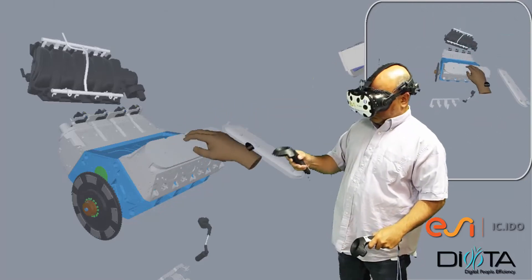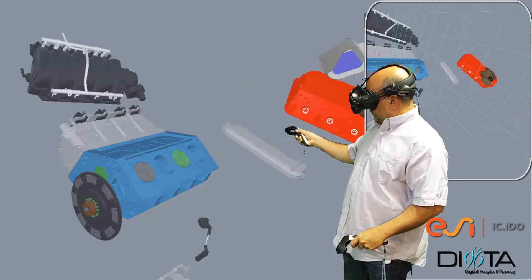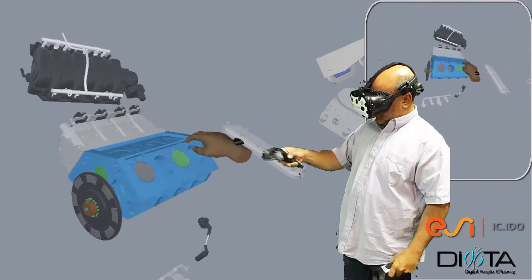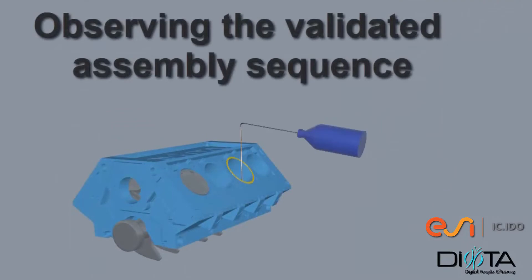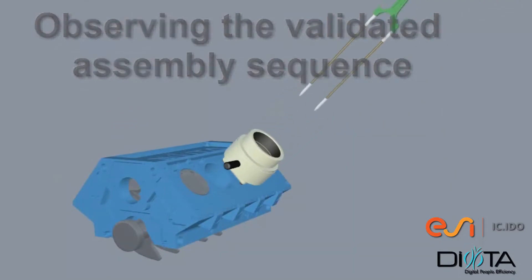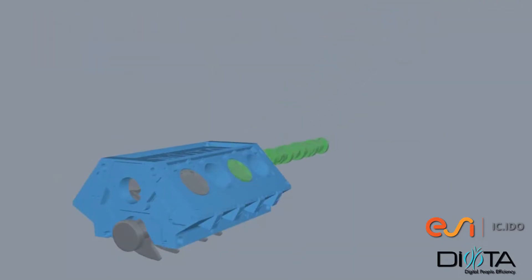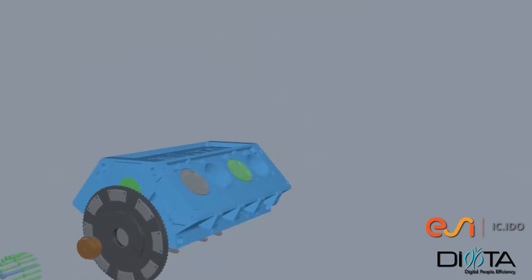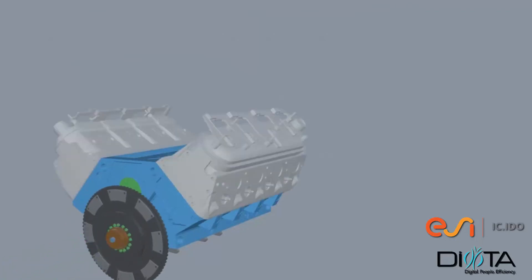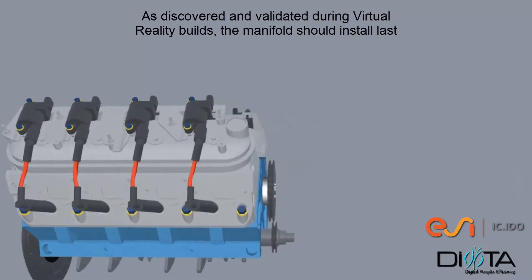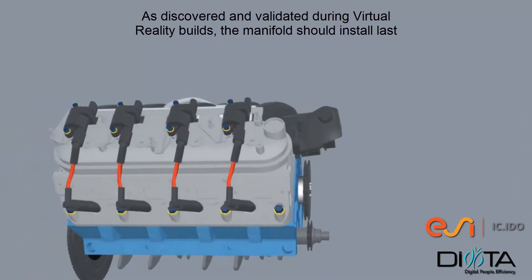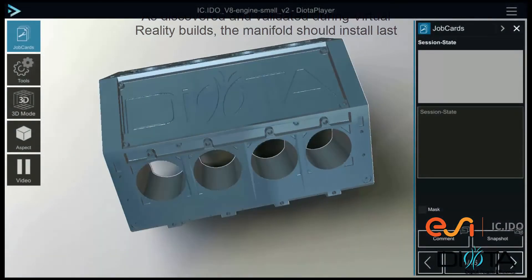We can continue doing the assembly sequence and validating it in virtual reality. If we observe the complete validated assembly sequence in the DEOTA player, we can see all of the steps that have been captured using virtual reality. As discovered and validated during virtual reality builds, the manifold should be installed last.